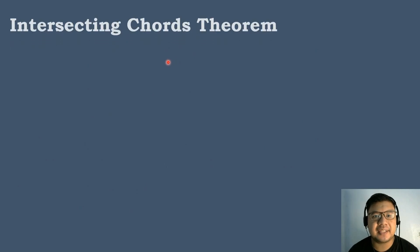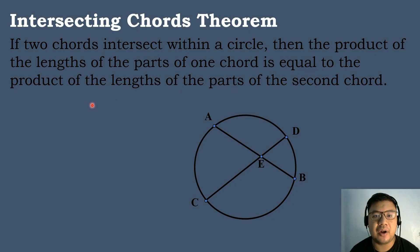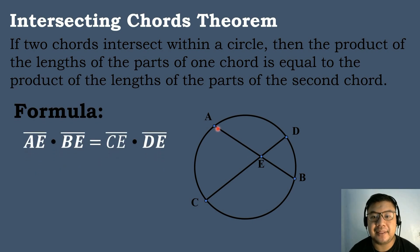Let's have first the Intersecting Chords Theorem. If two chords intersect within a circle, then the product of the length of the parts of one chord is equal to the product of the length of the parts of the second chord. In this circle, we have two chords — chord AB and chord CD. The formula is: segment AE times segment BE equals segment CE times segment DE.